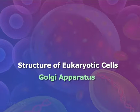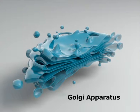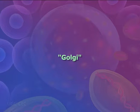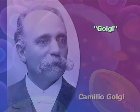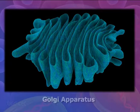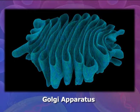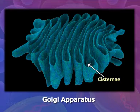The Golgi apparatus is the processing, packaging, and secreting organelle of the cell, and is much more common in glandular cells. It was first identified by Camillo Golgi. The Golgi apparatus is a system of membranes made of flattened sac-like structures called cisternae.